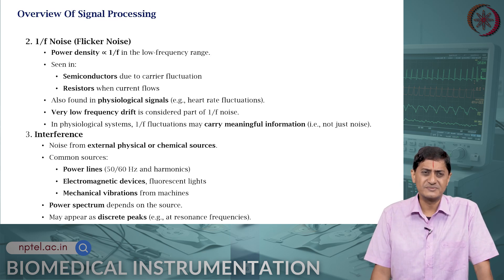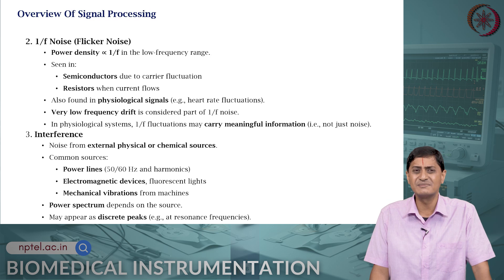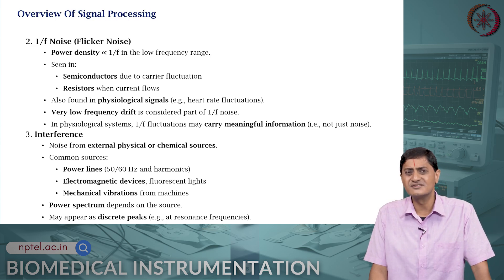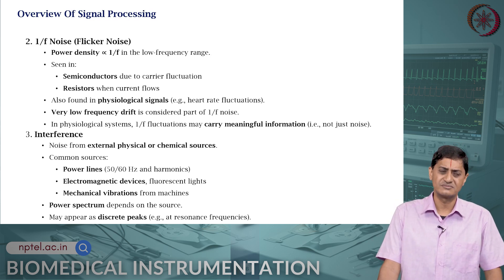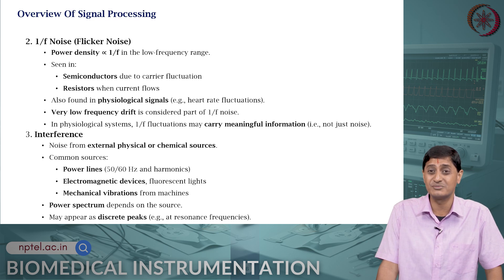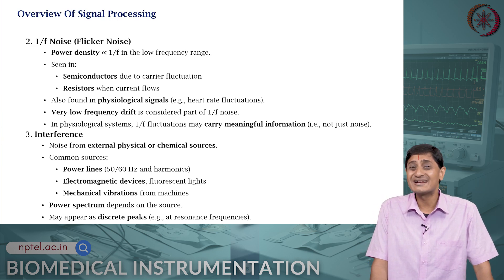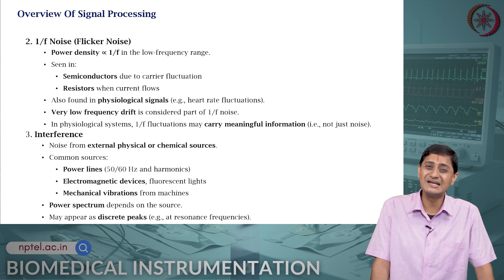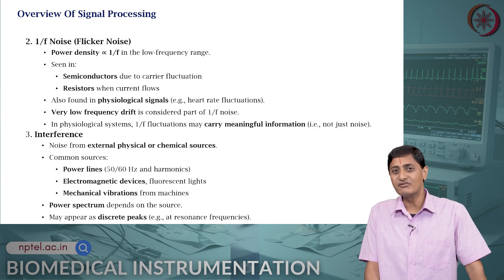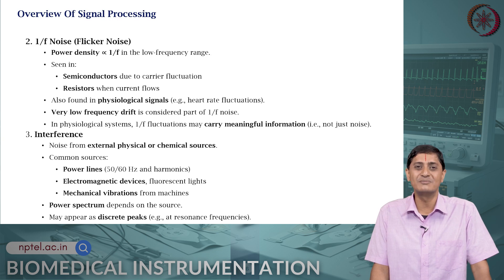Then there is 1/f noise or flicker noise. In this case, the power density is inversely proportional to frequency in low frequency ranges. This is seen in semiconductors due to carrier fluctuations and in resistors when current flows. It is also found in physiological signals, for example in heart rate fluctuations, and in very low frequency drift. In physiological systems, 1/f fluctuations may contain meaningful information, not just noise — they can occur in intentional actions or physiological activity. So the definition of what is a desirable signal versus noise depends entirely on the intention behind the measurement.